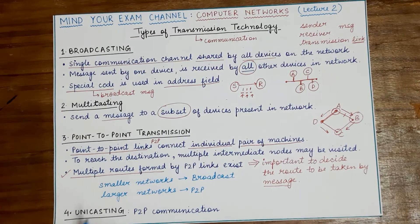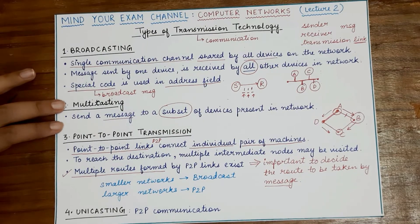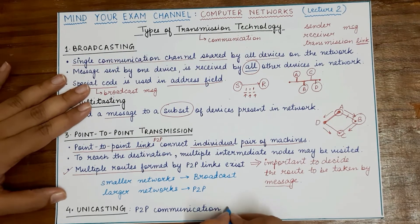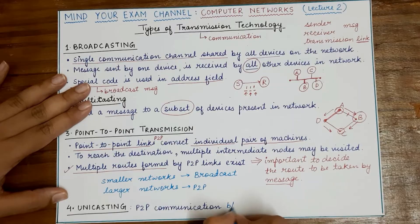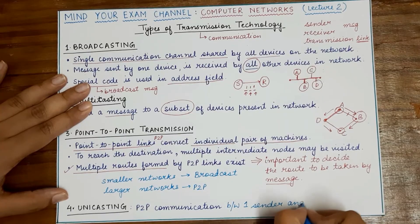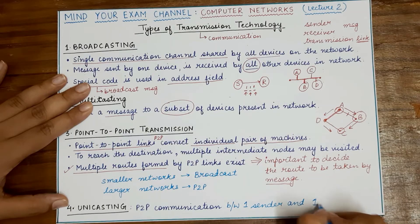One thing you must remember: unicasting is a type of point-to-point communication that happens between one sender and one receiver.